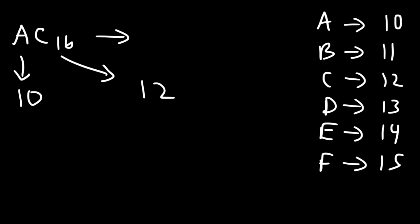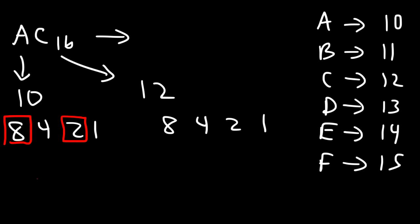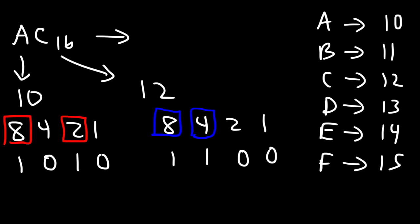Our next step is to convert these two numbers into binary numbers. Let's use the numbers 8, 4, 2, and 1 for each of them. Keep in mind, this is 2 to the 0, 2 to the 1, 2 squared, and 2 cubed. So 10 is the sum of 8 and 2, so we're going to replace 8 and 2 with a 1, and the numbers we didn't use we'll replace with a 0. 12 is basically 8 plus 4, so let's replace those two with a 1, and 2 and 1 with a 0. So 10 is equivalent to the binary number 1010, and 12 can be represented as 1100 in the binary system.